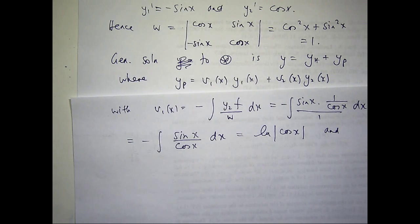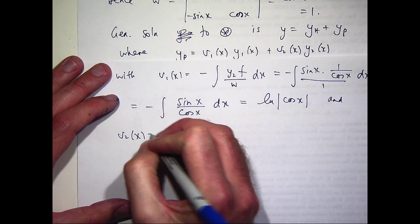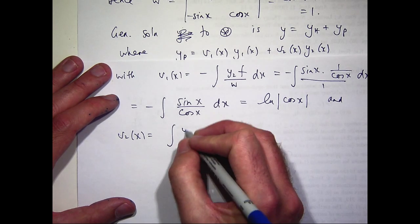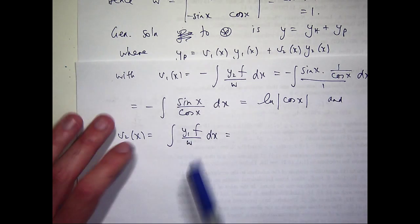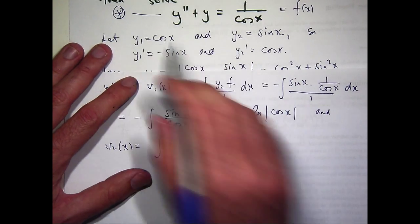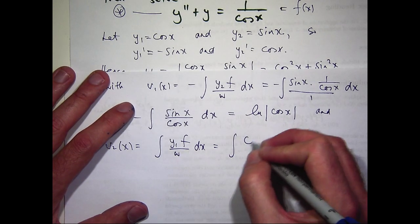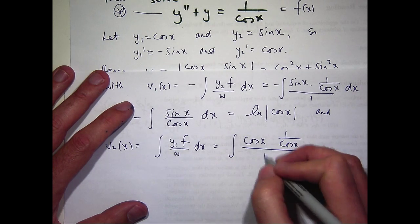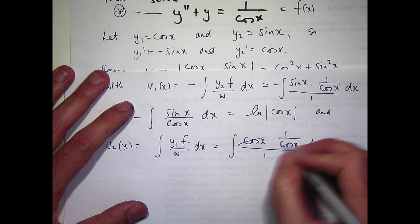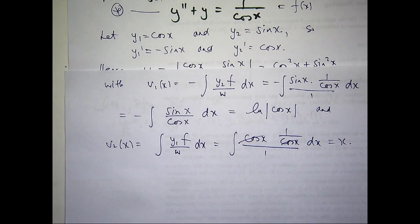And v sub 2 is just this integral here. So let's work that out. W is 1, y1 is cosine x, and f is 1 on cosine x. That's kind of neat. So I'm integrating 1 here.